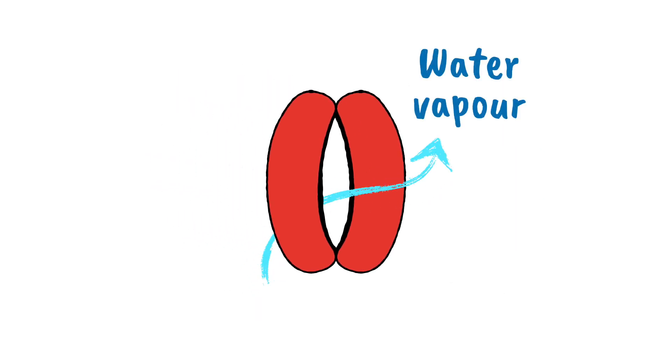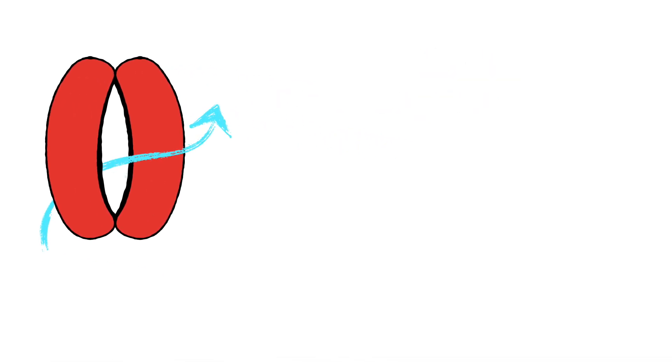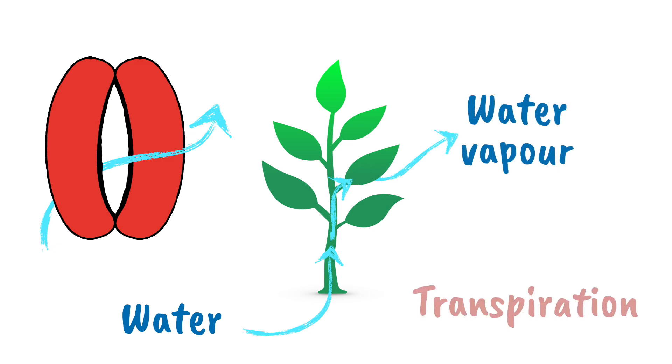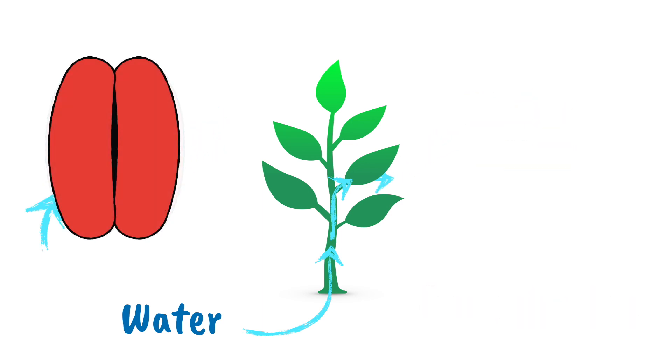One gas we haven't mentioned yet that is released through the stomata is water vapor. This release of water causes a continuous movement up the plant, a bit like water being sucked up a straw. Look up transpiration if you want to know more about that. While this release of water is essential for plants, they also need to have the ability to prevent water loss if they're short on it.